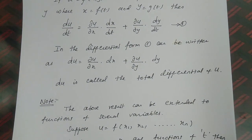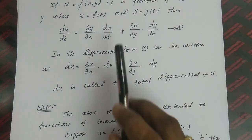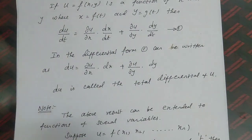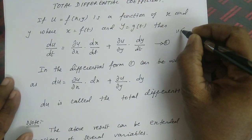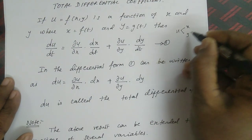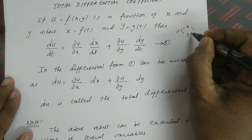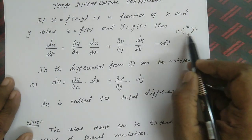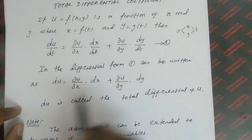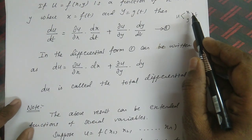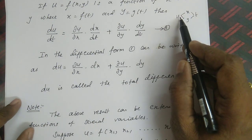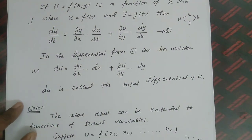The result is called the total differential coefficient. Here, u is a function of x and y, and x and y are functions of t. So in this case, the total differential is du = (∂u/∂x)dx + (∂u/∂y)dy. Based on this, we will look at a problem.